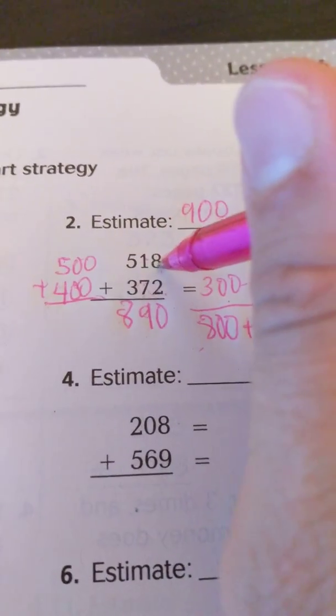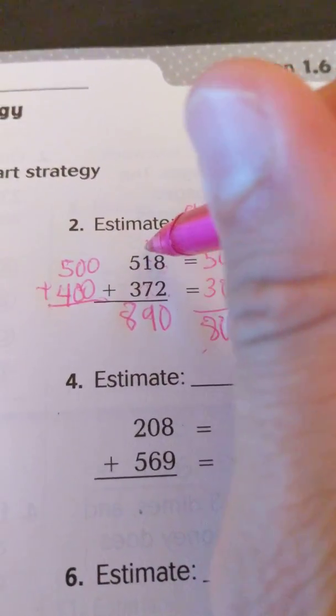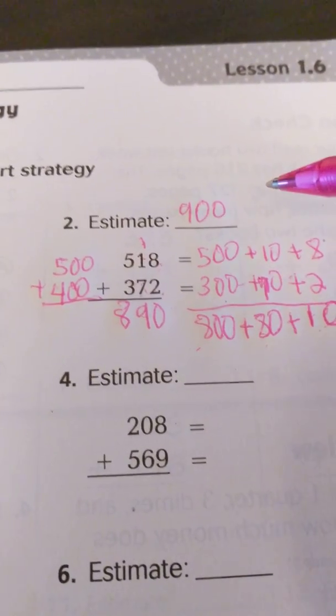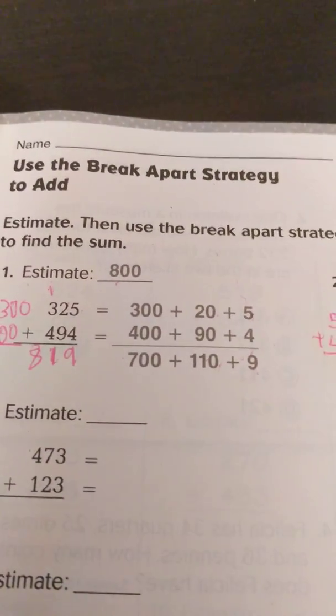is 8 plus 2 is 10. Regroup. 2 ones plus 7 makes 9. 5 plus 3 is 8, so 890. And that is how we use the break apart strategy to add.